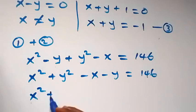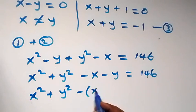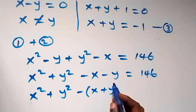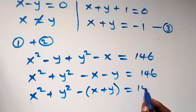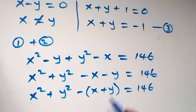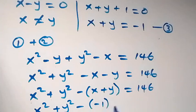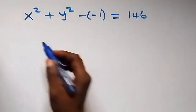We can rewrite this as x squared plus y squared, minus (x plus y), equals 146. From equation three, x plus y equals minus one, so we replace x plus y with minus one, giving x squared plus y squared minus times minus one equals 146.